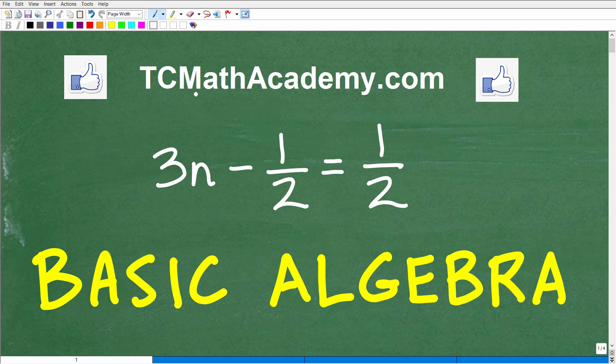Okay, this is John from TCMathAcademy.com, and here we have a lovely basic algebra equation. So it is 3N minus 1 half is equal to 1 half.